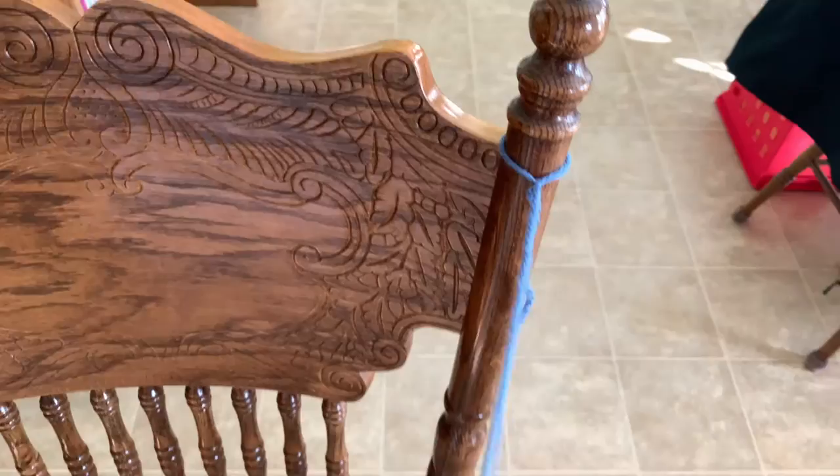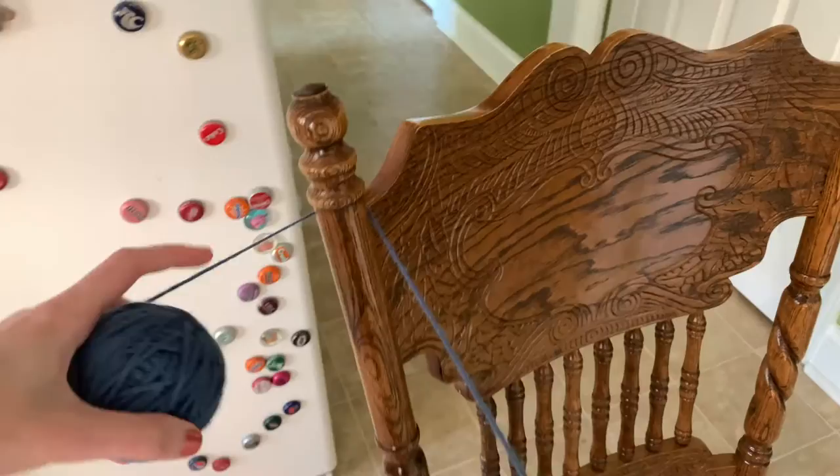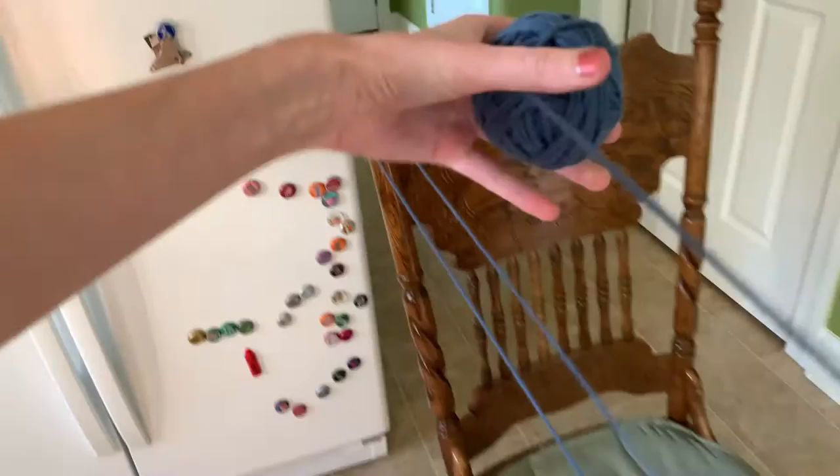The first step is braiding our yarn. So for me I'm going to do one long braid and to make this easier I've got two chairs set up spread apart. I'm going to tie one end of my yarn to the one chair and then walk across to the other chair and wrap around the top, and I'm going to go back and forth until I have nine strands running back and forth.